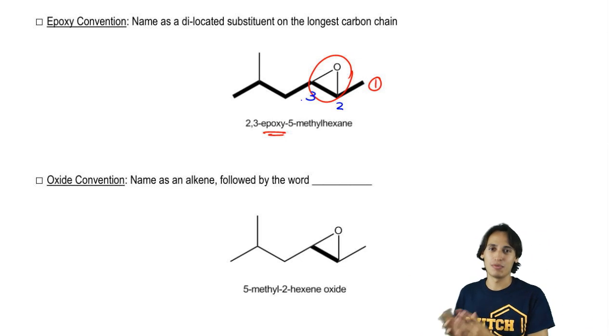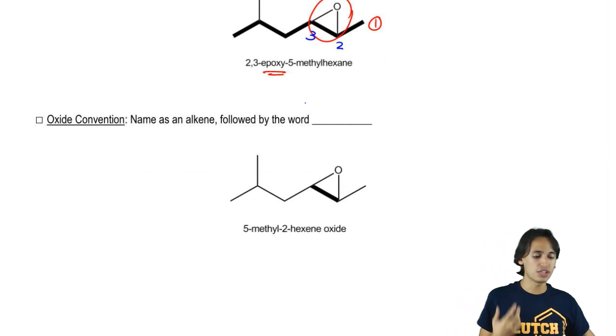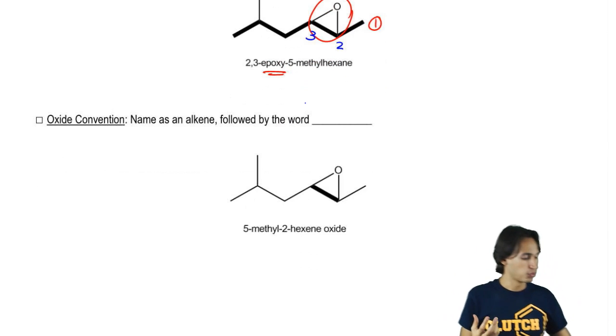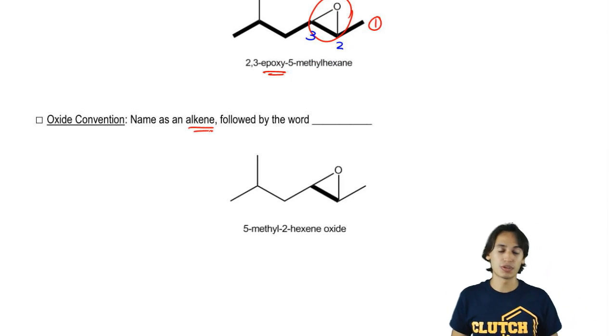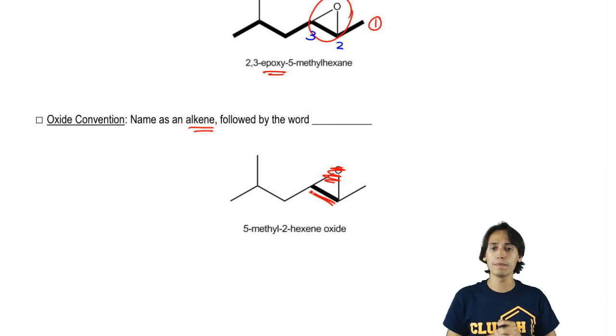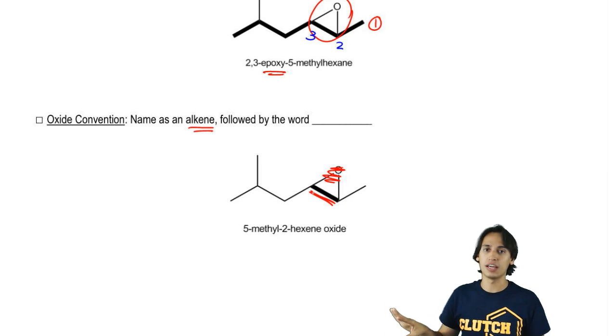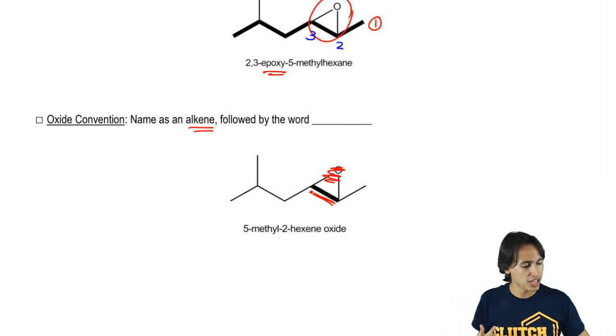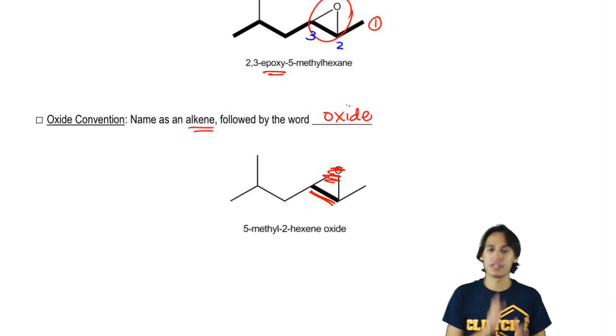Now on top of that, there's even one more way to name epoxides. This one actually comes from even further back in the history. This one is actually like a reaction. What they're basically saying is name it as an alkene. So pretend that the epoxy wasn't even there. Replace it with an alkene. Name it as the alkene, the entire name. And then at the end, just add the word oxide.